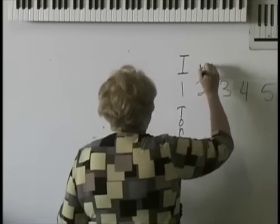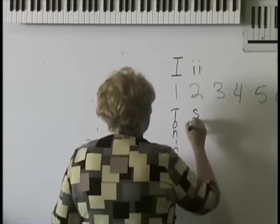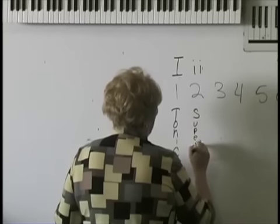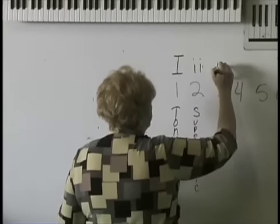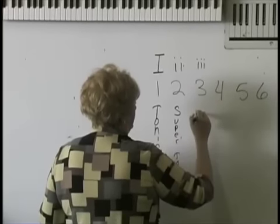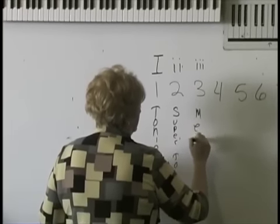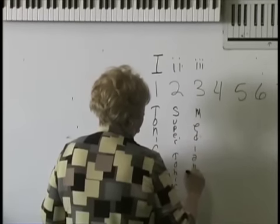Number two is the little Roman numeral two and it's called the supertonic. Number three is the little Roman numeral three and that's called the mediant. I think the mediant. Middle.